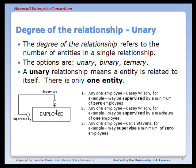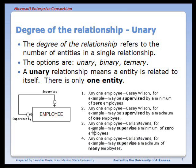Reading the relationship in the other direction: any one employee — for example Carla Stevens — may supervise a minimum of zero employees, meaning she may have no management responsibilities. Any one employee may supervise a maximum of many employees, so she may oversee several employees.